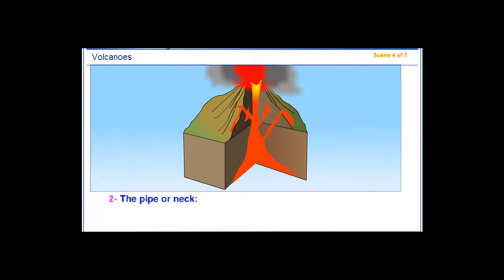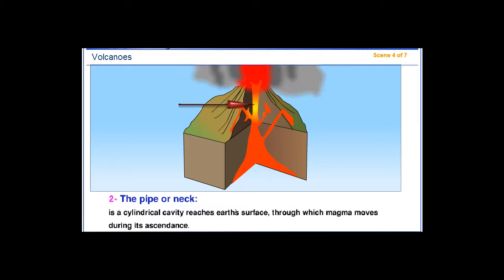Second, the pipe or neck, which is a cylindrical cavity that reaches the Earth's surface through which magma moves during its ascendance.